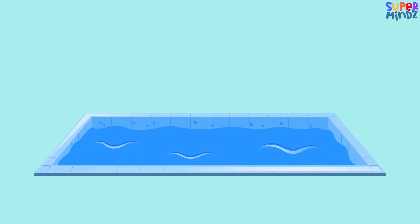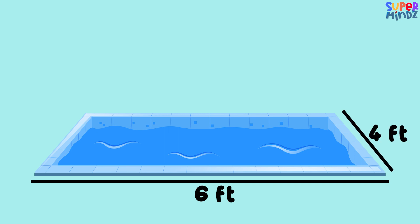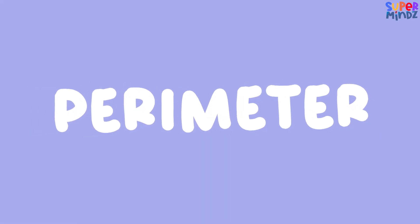Now for the swimming pool with a length of six feet and a width of four feet, what's the area? Yes, it's six times four, which equals 24 square feet. See, finding area is as easy as pie. Now let's